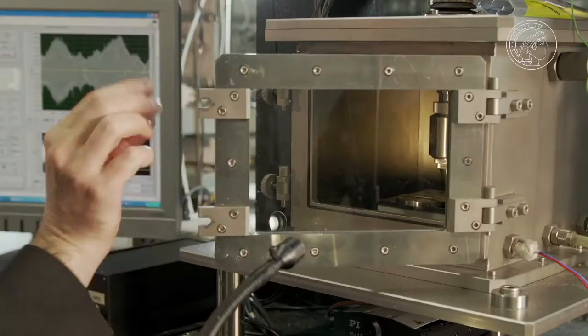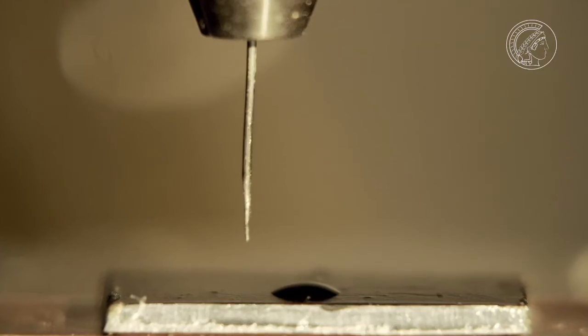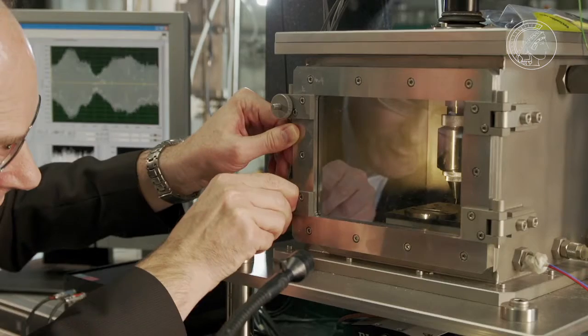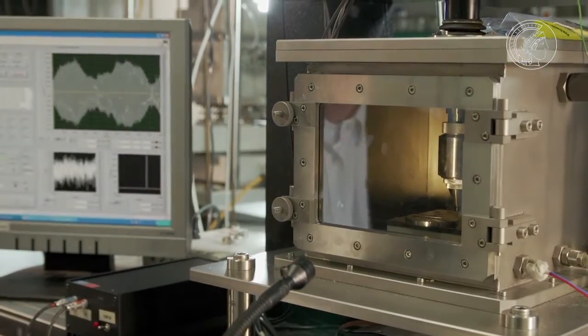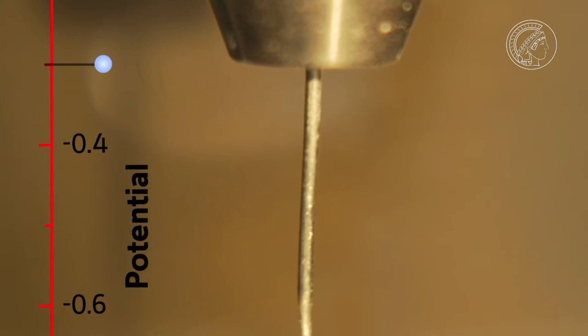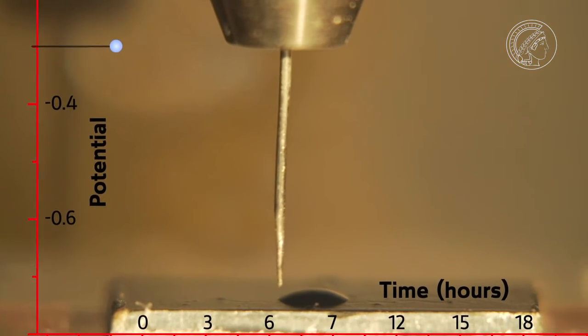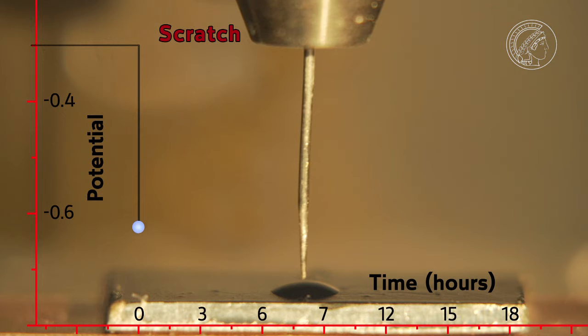Until now it was considered difficult to bring about the spontaneous repair of plastic varnishes. Michael Rohwerder is testing the new process. At the beginning the tension is uniformly high. But the brine results in a sudden drop around the scratch, a sign that corrosion is starting. But then the tension gradually starts to rise again and shows that the corrosion is slowing down. Within a day the scratch has even been repaired.